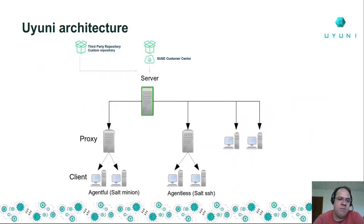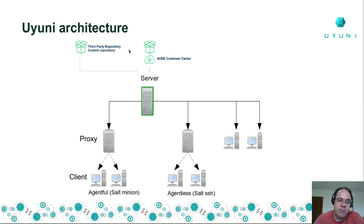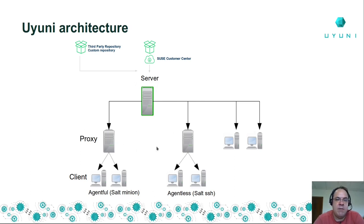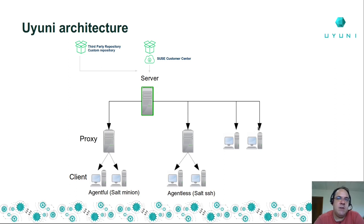The architecture of Uyuni is the very typical client-server architecture. There's the Uyuni server, which can be connected — if you are a SUSE customer — to the SUSE Customer Center. It also connects to third-party public repositories, for instance in the case of Debian, Ubuntu, CentOS, or Alma Linux. Optionally, you have proxy elements in case you need a very large deployment. When you go over 5,000 managed systems, we advise you to use proxies to offload some of the network and first-contact workload from the Uyuni server. You can attach systems directly to the Uyuni server if you have only a few hundred or a few thousand systems.